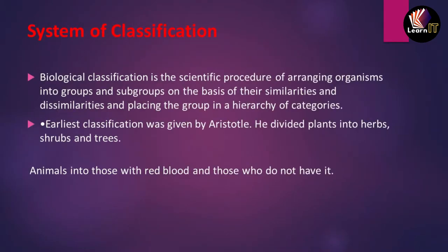The first topic is the system of classification. Biological classification is the scientific procedure of arranging different organisms into different groups, and those groups into subgroups, on the basis of their similarity and dissimilarity, and placing these groups into certain categories.